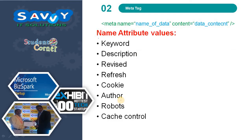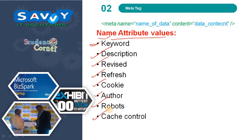The name attribute values include: keywords, description, refresh, and author, which we have already seen. Apart from these, there are also: revisited, cookie, robots, and cache control.